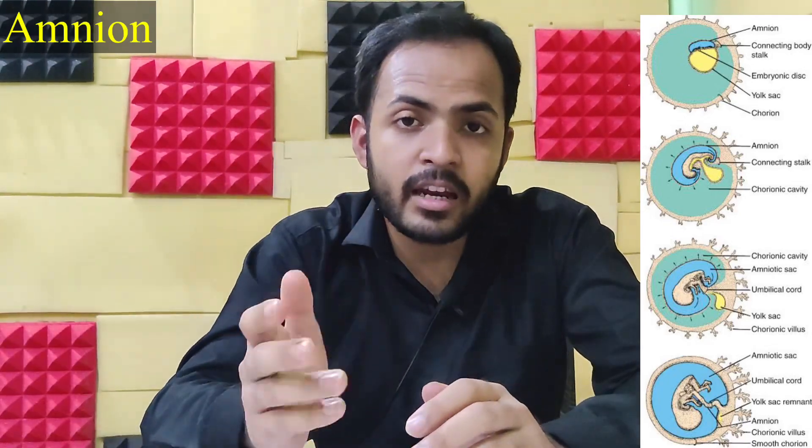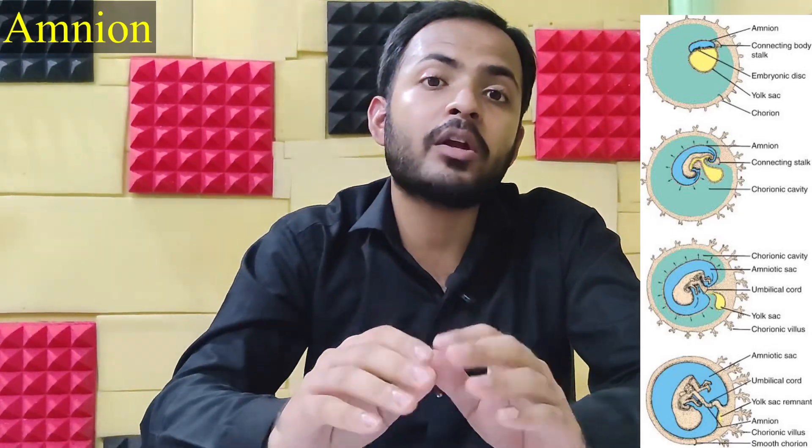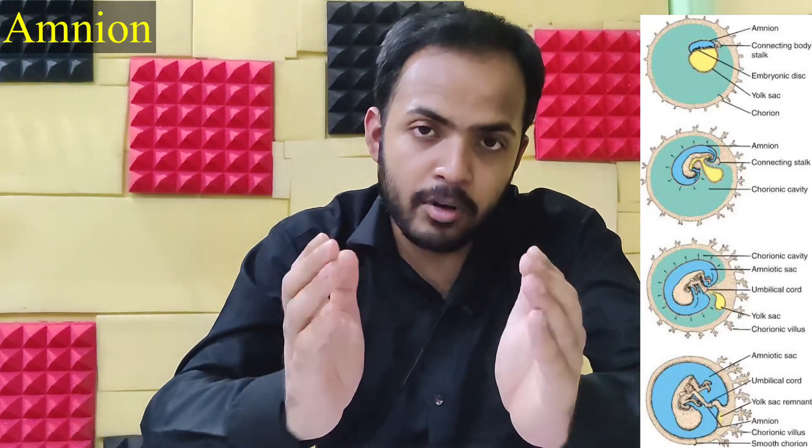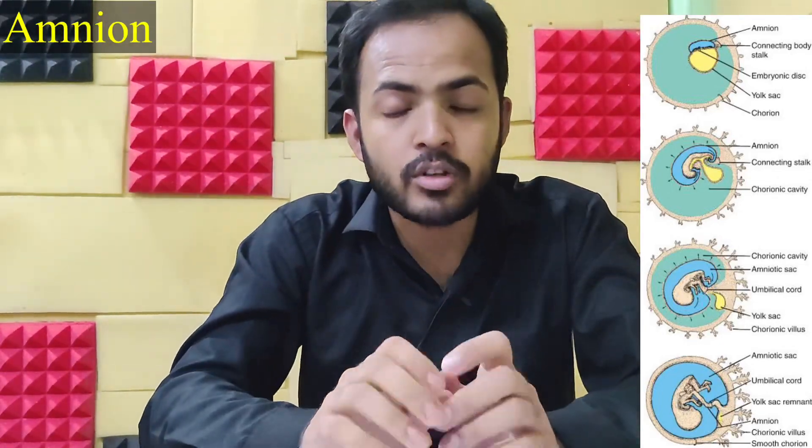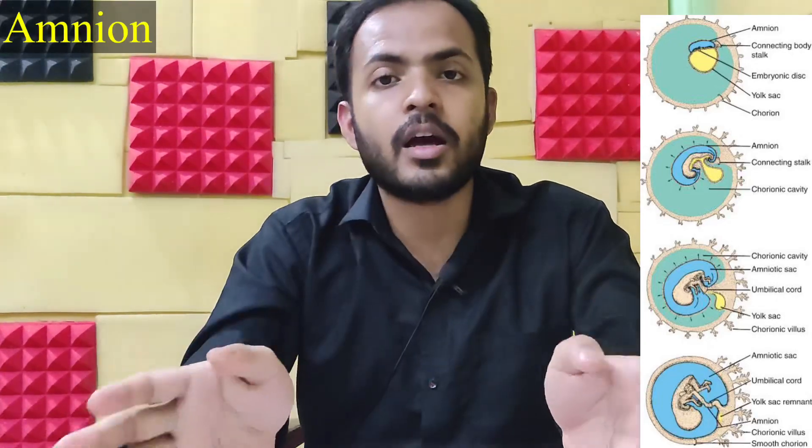By the end of the eighth week of embryonic development, this Amnion ultimately covers the entire embryo. The amniotic cavity is filled by amniotic fluid. The contents of amniotic fluid are mostly water, electrolytes, fetal urine, beta-HCG, placental lactogen, and cells exfoliated from the fetus.